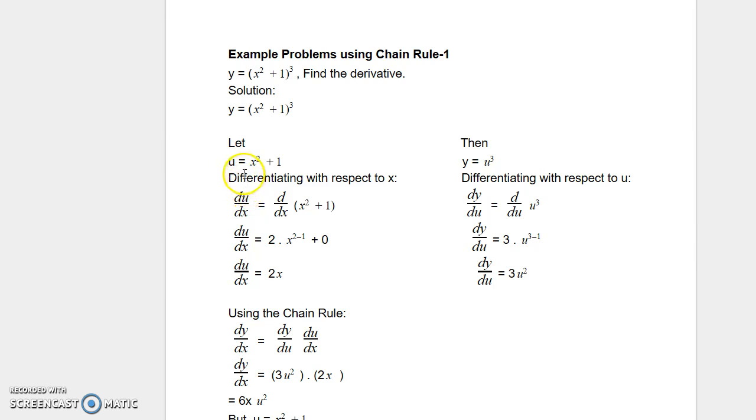When we differentiate u with respect to x we can write it as d/dx of x² + 1. Using the power rule, d/dx of x² translates to 2x^(2-1) plus d/dx of 1, which is a constant equal to 0.